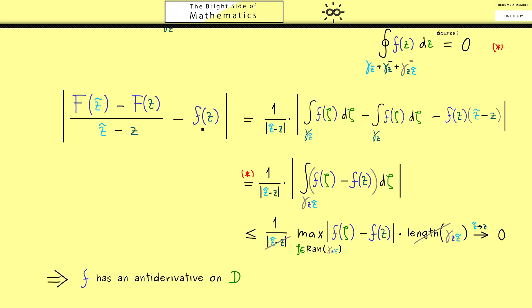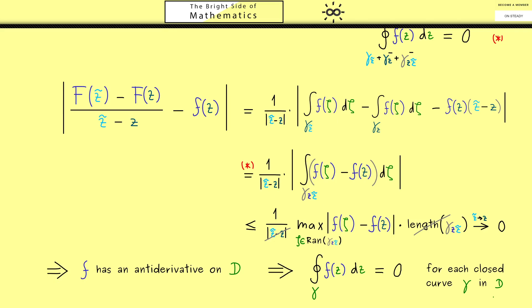So simply by continuity we know that the values also get closer and closer. So in summary, we get the result that the difference quotient goes to f of z. Or to say it in other words, the thing we wanted to show, that capital F is an antiderivative of lowercase f, is now shown. Now, of course, this works for every point z in the domain, which means f has an antiderivative defined on the whole domain D. However, for this case we have already proven the fact that every contour integral along a closed curve is 0. And indeed, this closes our proof of Cauchy's theorem.